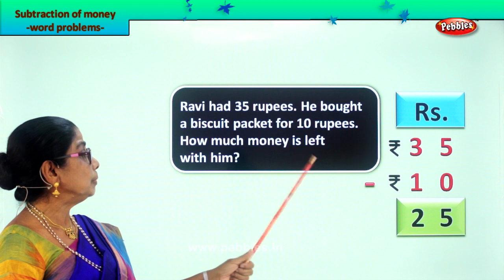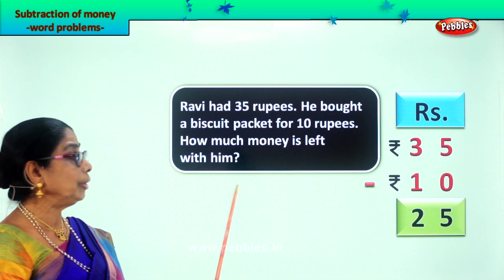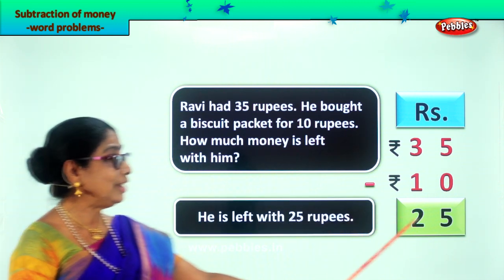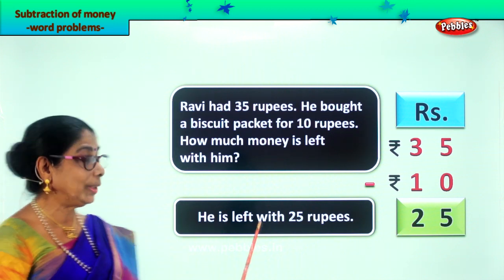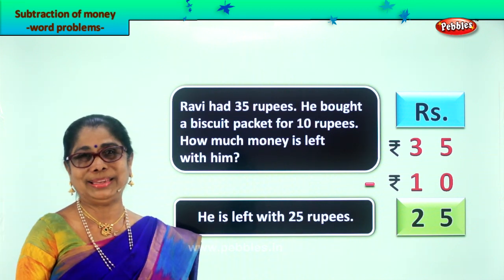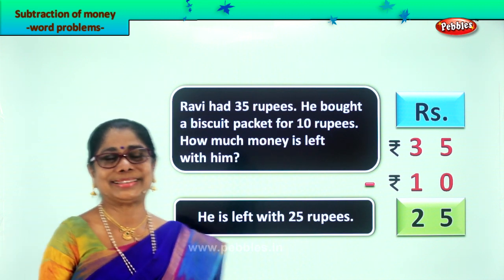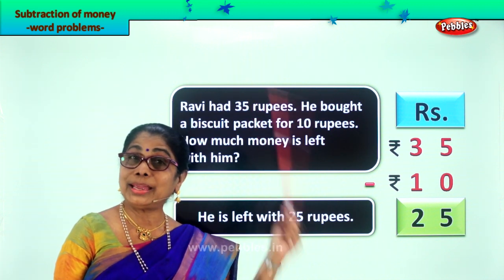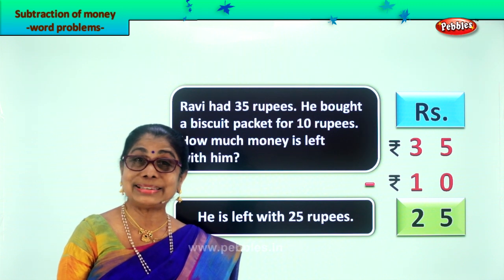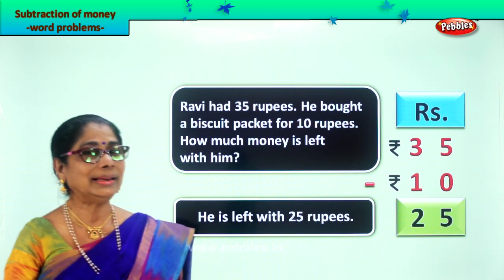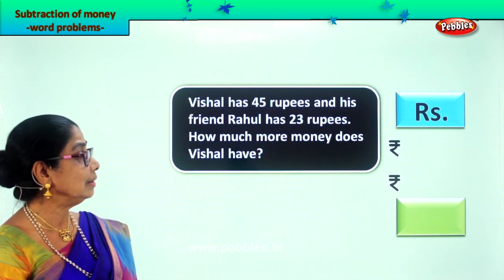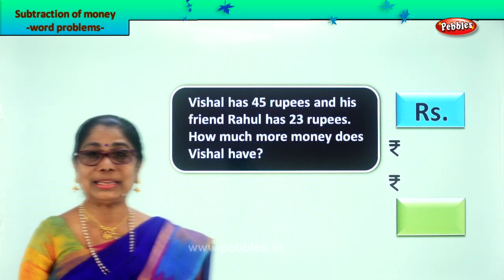Ravi had a total of 35 rupees, he spent 10 rupees to buy a packet of biscuits. How much money is left with him now? 25 rupees. Ravi is left with 25 rupees in his pocket. Let's take another word problem and read together and work it out together.